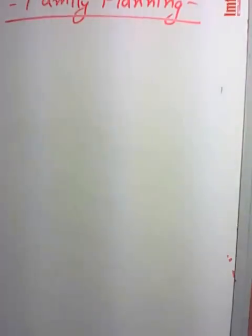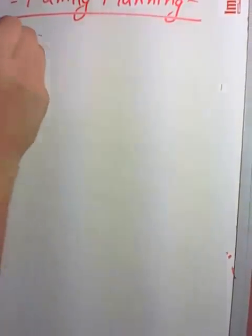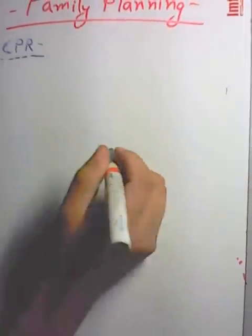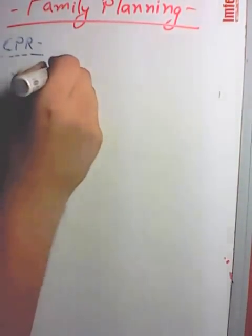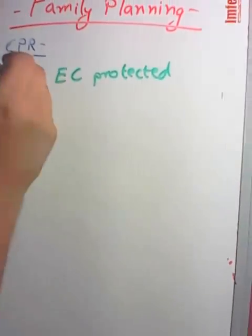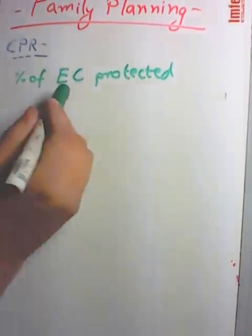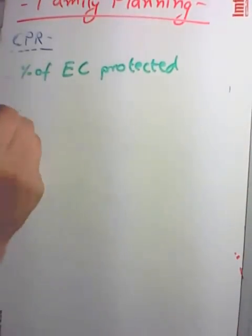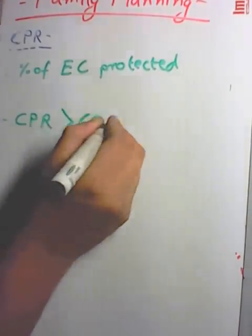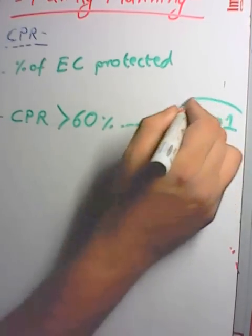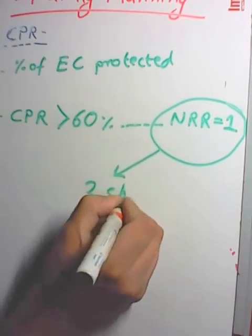Couple protection rate is defined as the percentage of eligible couples protected efficiently against childbirth. Statistically, if the couple protection rate is greater than 60, then the net reproductive rate of the country can equal 1, which is equivalent to a 2-child norm.